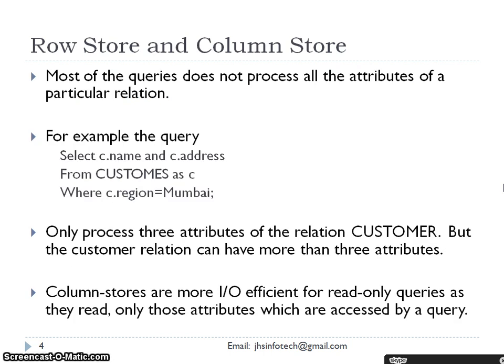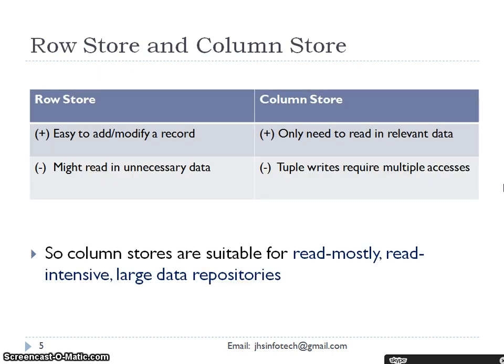Most queries do not process all attributes of a particular relation. For example, the query: SELECT c_name AND c_address FROM customers AS c WHERE c.region = 'Mumbai'. This processes only three attributes of the customer relation. The customer table may have 20 or 30 attributes, but we are accessing only three. Column stores are more input/output efficient for read-only queries, as they read only those attributes accessed by the query.